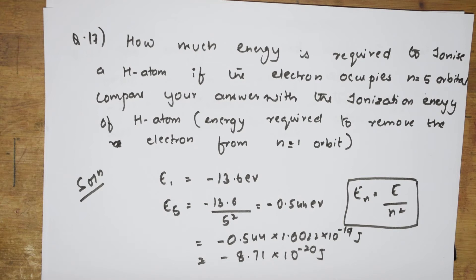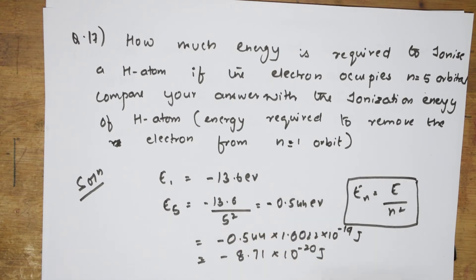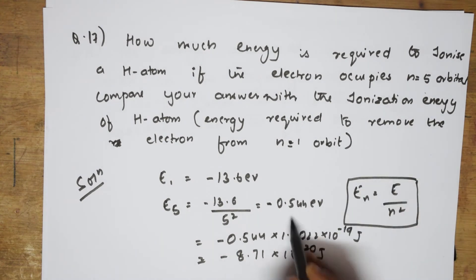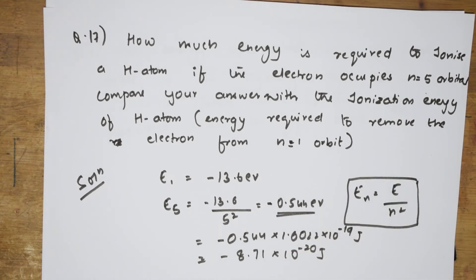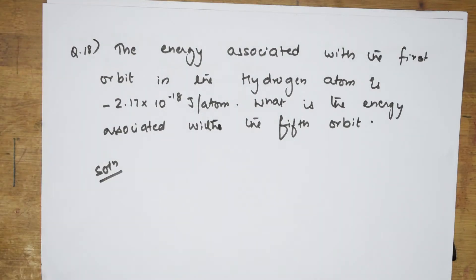So that means 0.544 electron volt energy is required to ionize hydrogen when the electron is in the 5th orbit. The question also asks us to compare this with the ionization energy. So I require this much energy to ionize it when it is in the 5th orbit. They also say: compare your answer with the ionization energy of hydrogen atom. So what should I calculate? I need to calculate what energy is associated with the 5th orbit.